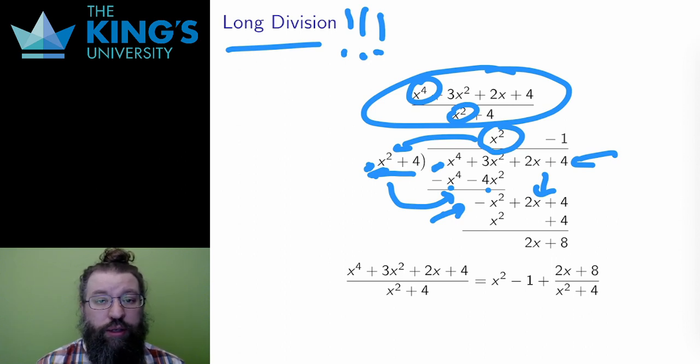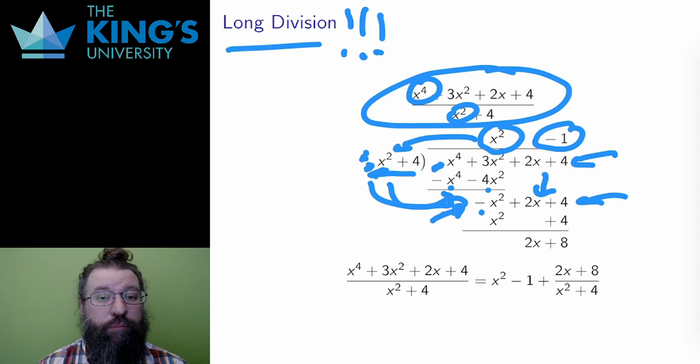Well, then I have a new polynomial. Negative x squared plus 2x plus 4. And then I repeat. How does x squared plus 4 go into negative x squared plus 2x plus 4? Just looking at the first terms, I need to multiply by negative 1. I do so, and then subtract. And subtracting a negative is the same as adding, so I'm adding x squared plus 4 to this. The result is that the x squareds cancel, and I'm left with 2x plus 8.